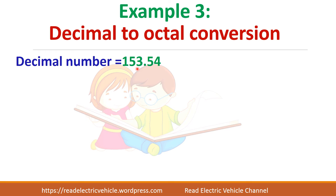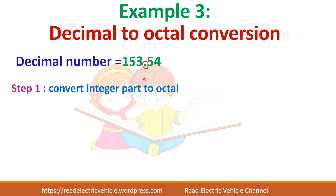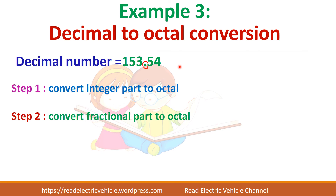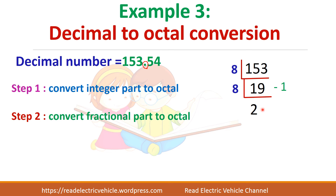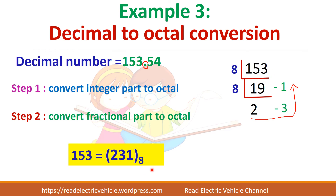Now let us take another example with a decimal point, so there is a fractional part as well. For a number with an integer part and a fractional part, the conversion is done separately. For the integer part use repeated division; for the fractional part use repeated multiplication. Take the integer part 153: divide by 8 to get 19 remainder 1, then divide 19 by 8 to get 2 remainder 3. The octal number for 153 is 231.